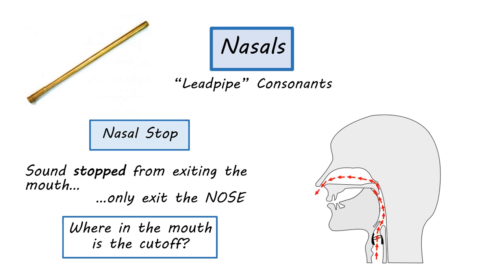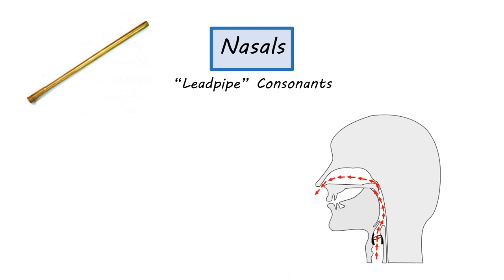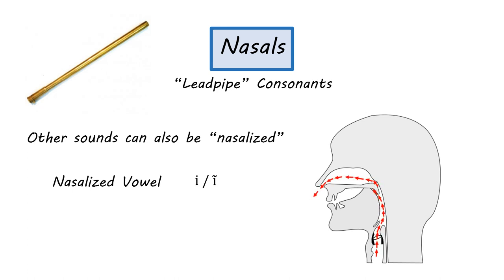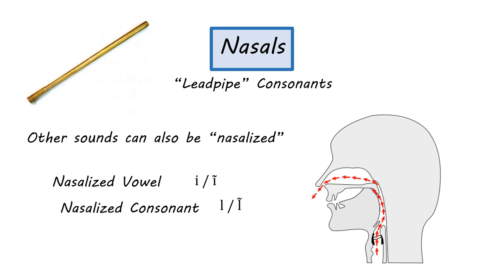All that 'nasal' really means is that you're allowing air to flow through your nose. It's possible to allow air through your nose without cutting off all the air flowing through your mouth — so you can nasalize other sounds. For example, you can have nasalized vowels: 'e' which is not nasalized, versus a nasalized 'e.' You could even nasalize a consonant, like 'l' versus a nasalized 'l.' In certain languages those sounds might be contrastive — it might matter whether air is flowing through your nose or not.